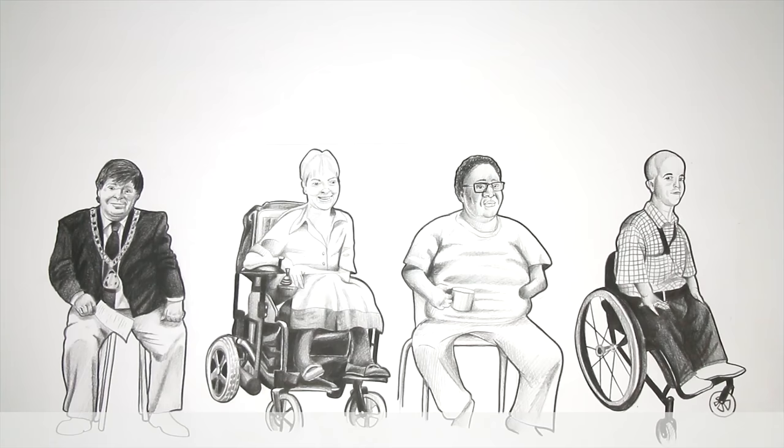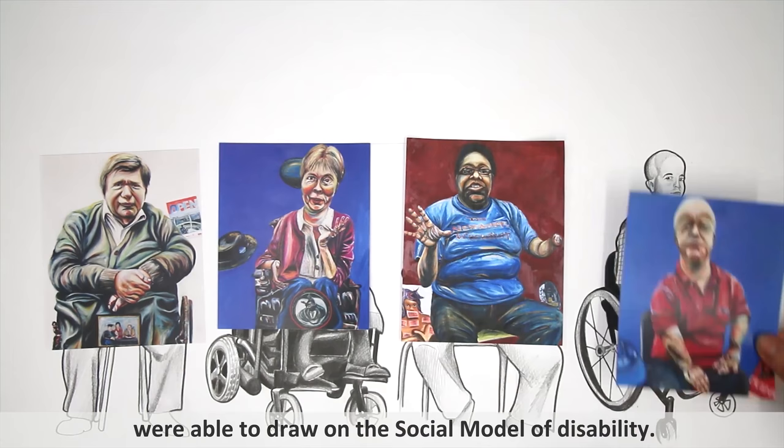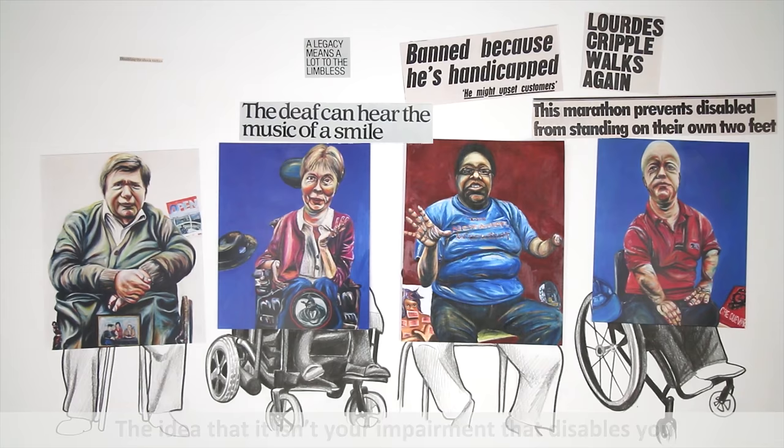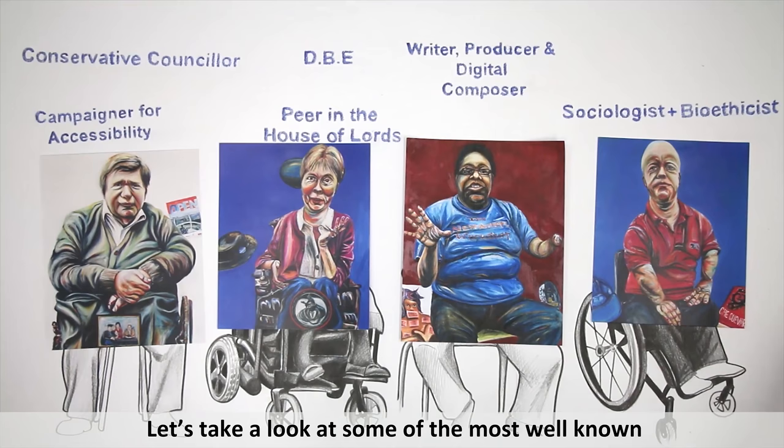Unlike the old masters, artists from the disability arts movement were able to draw on the social model of disability — the idea that it isn't your impairment that disables you, but the attitudes and infrastructure of the society in which you live.